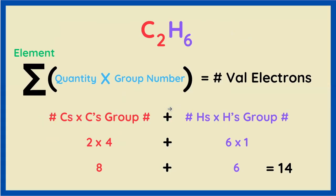We just showed that C2H6 has fourteen valence electrons, and with this equation we can prove it. We take the quantity of carbons in this molecule, two, multiply it by that group number, which is four, and add that to the number of hydrogens, six, times the fact that there's one valence electron per hydrogen atom, so eight plus six is fourteen, just like we saw.